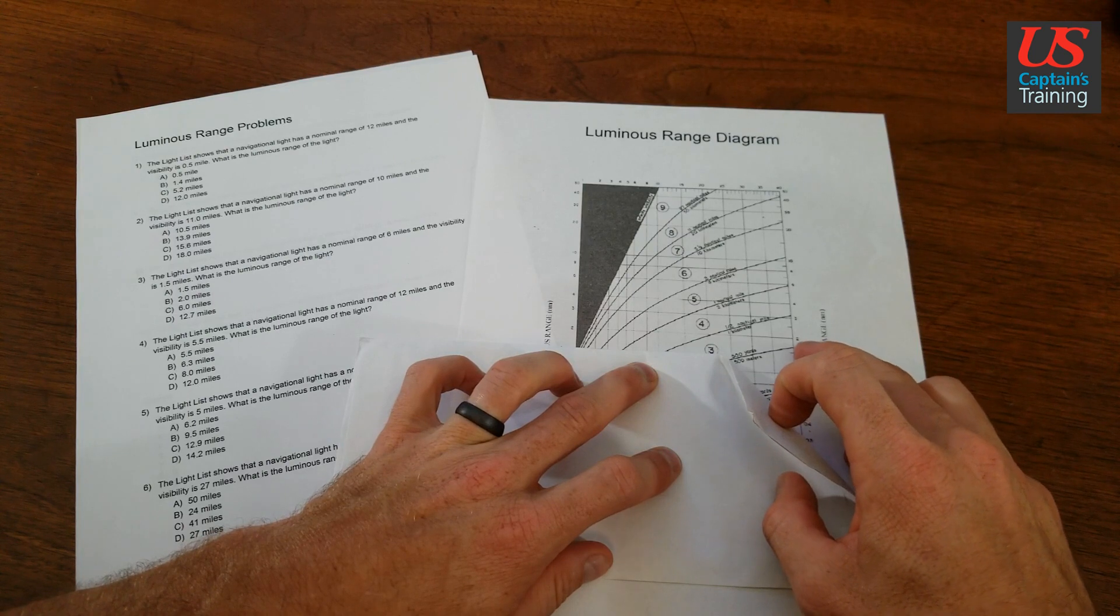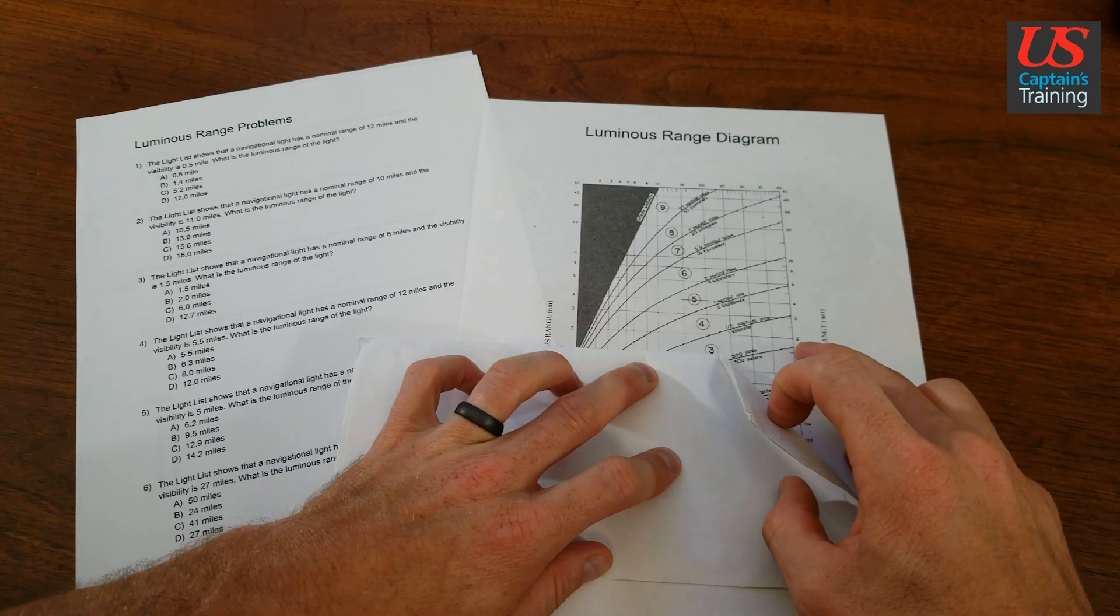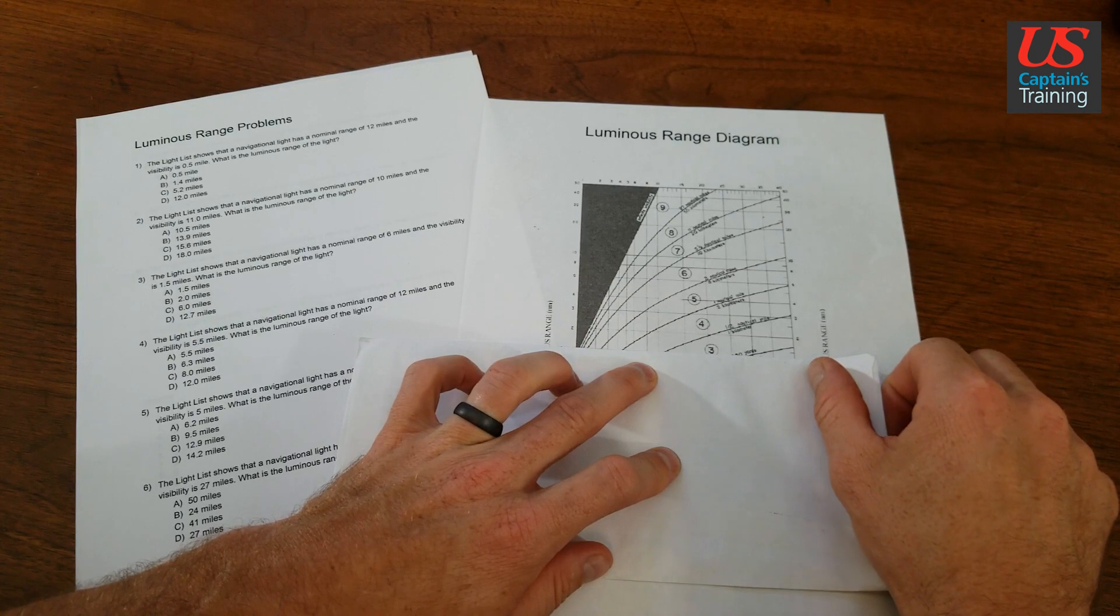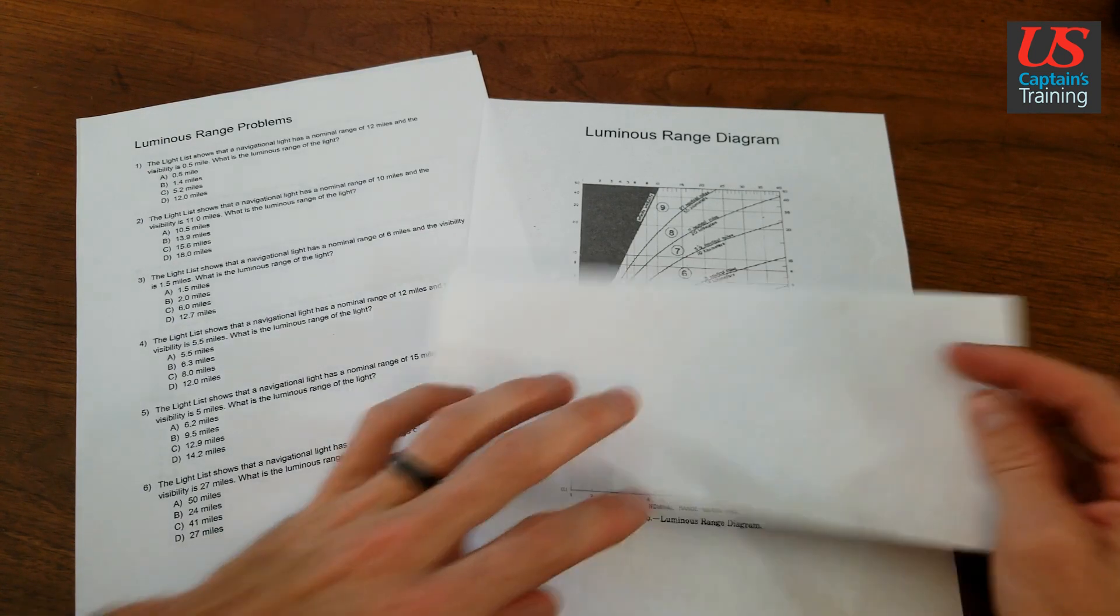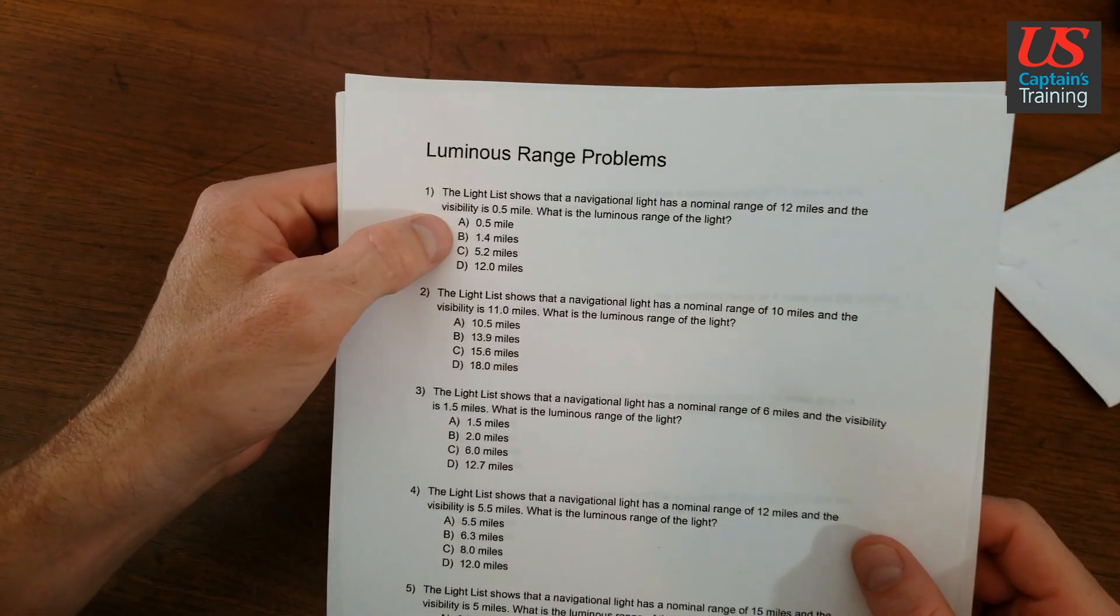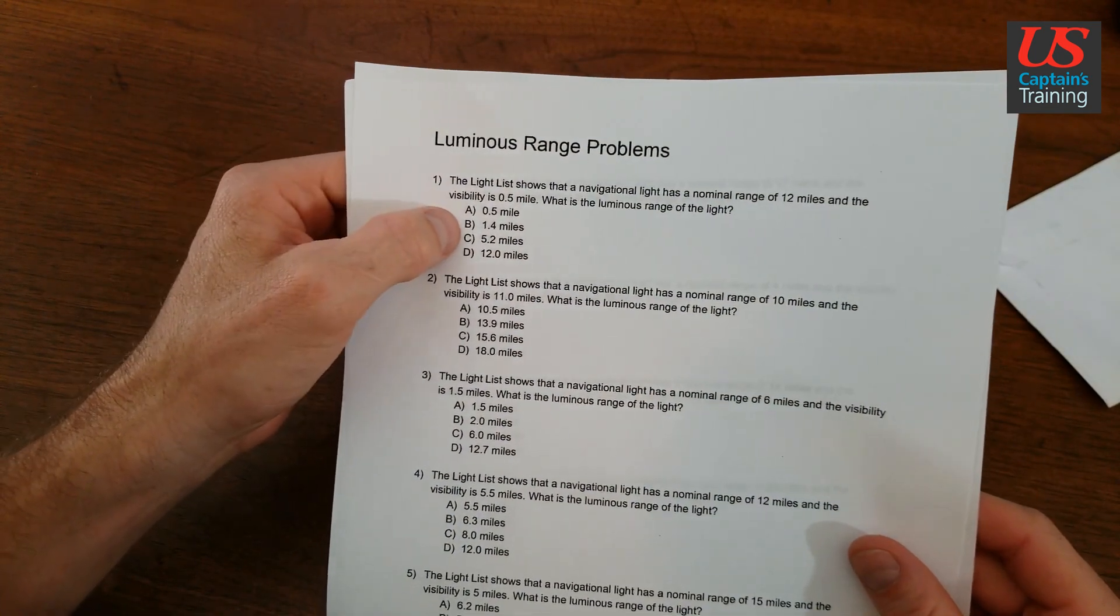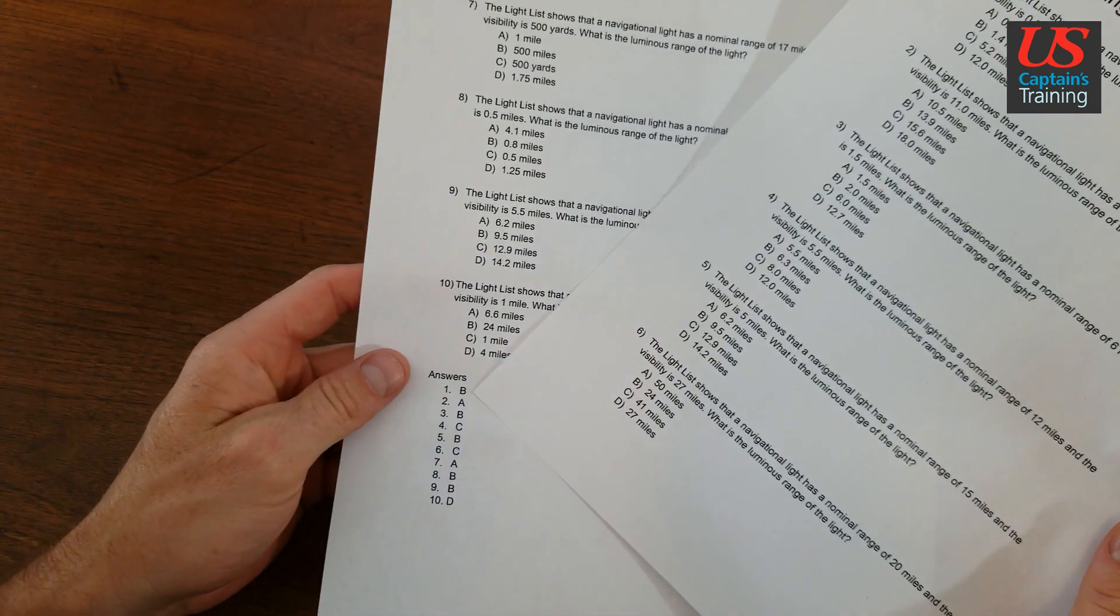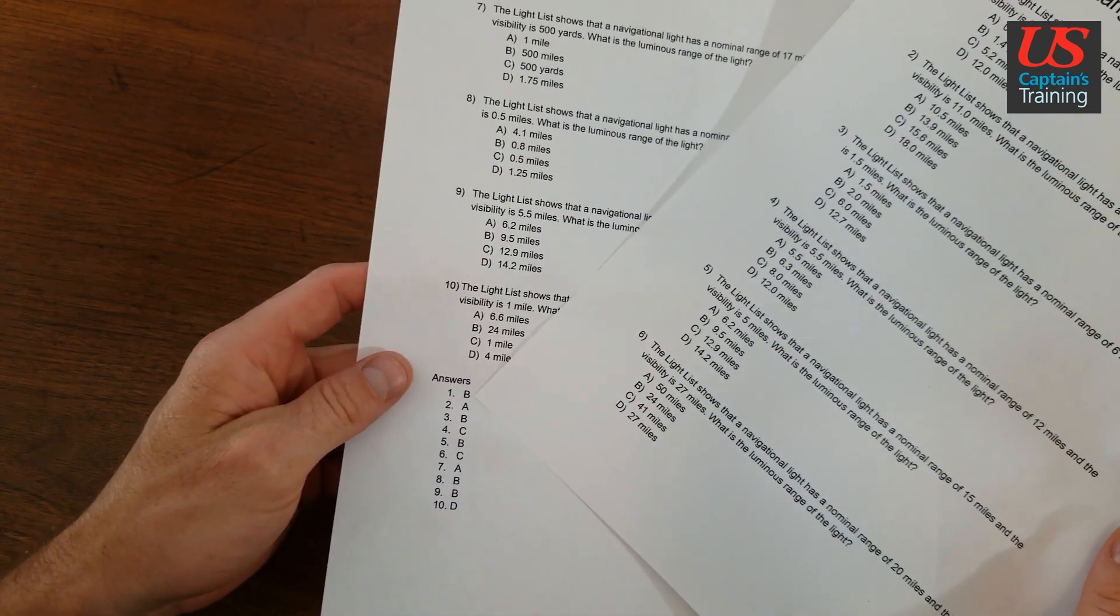That little half tick there is 1.5. It's a little bit below. I'm going to say 1.4. So let's look for 1.4, it's there. So number one is B, 1.4. We check it. One is answer B.